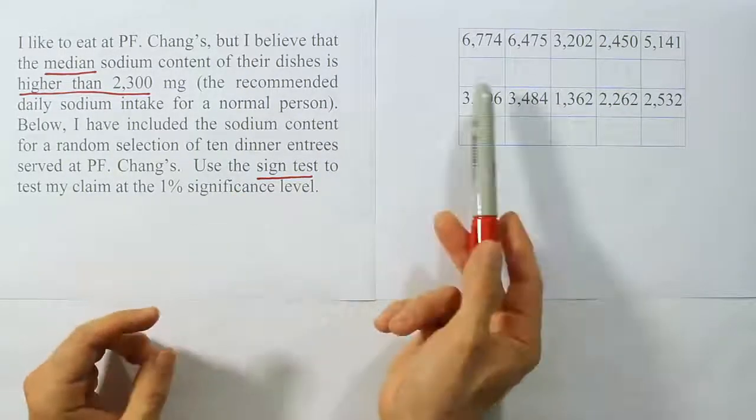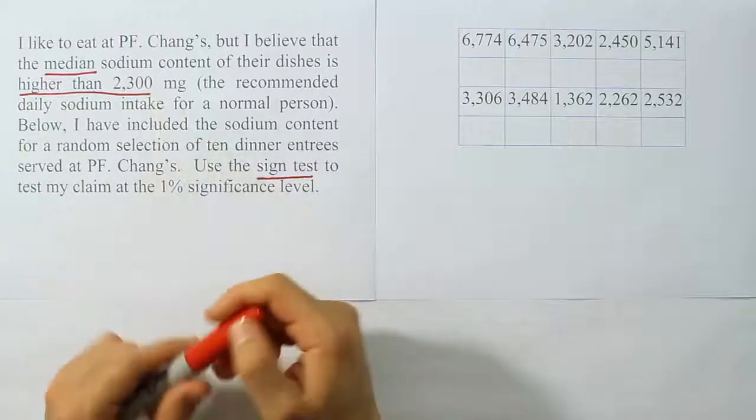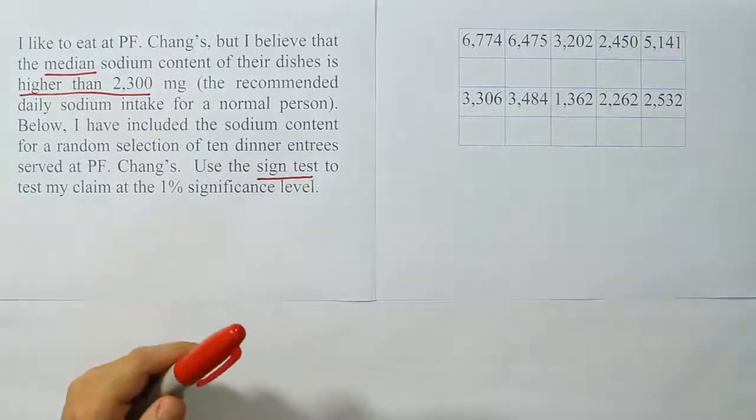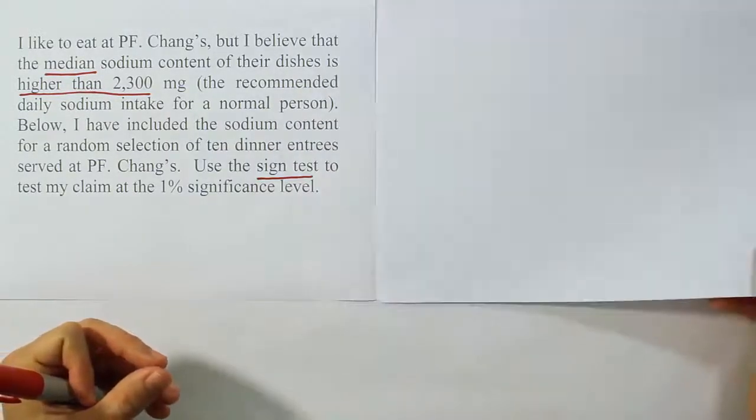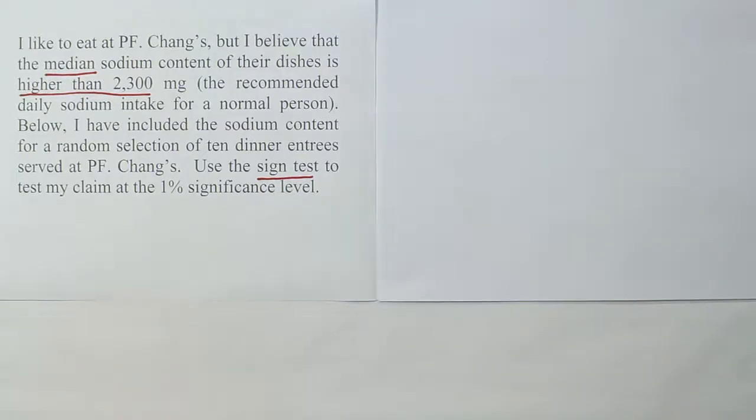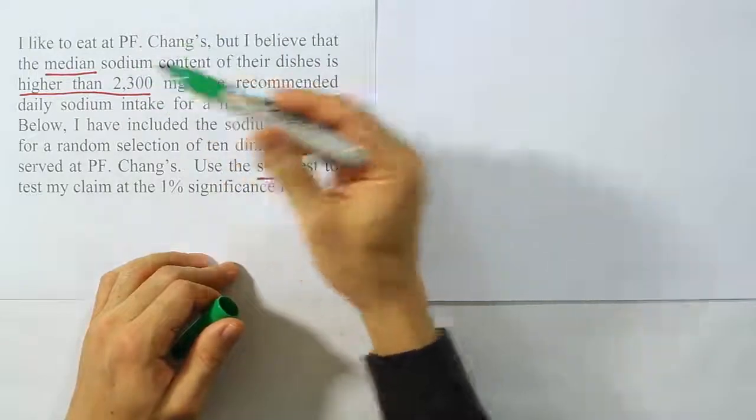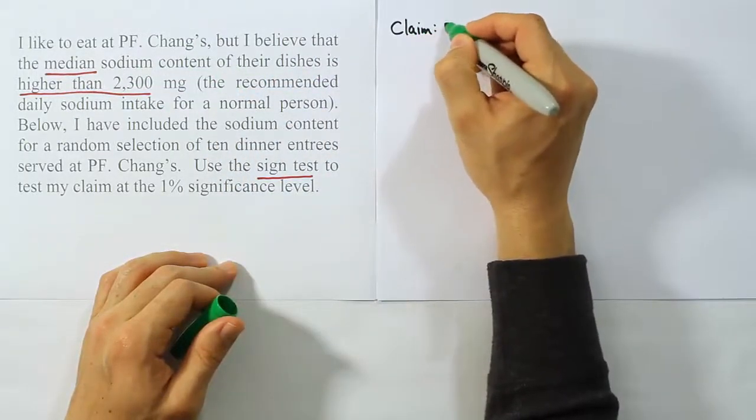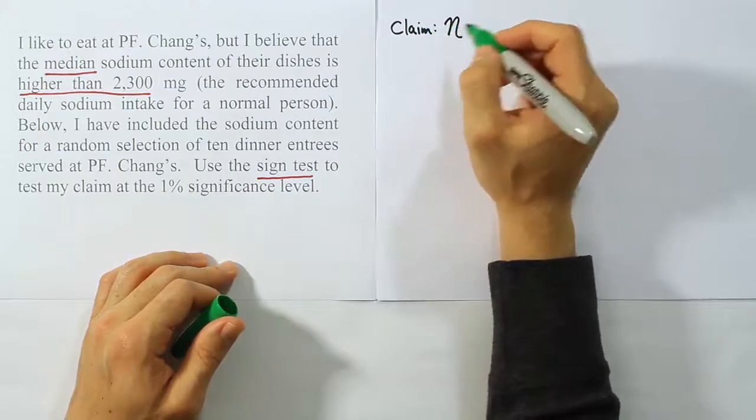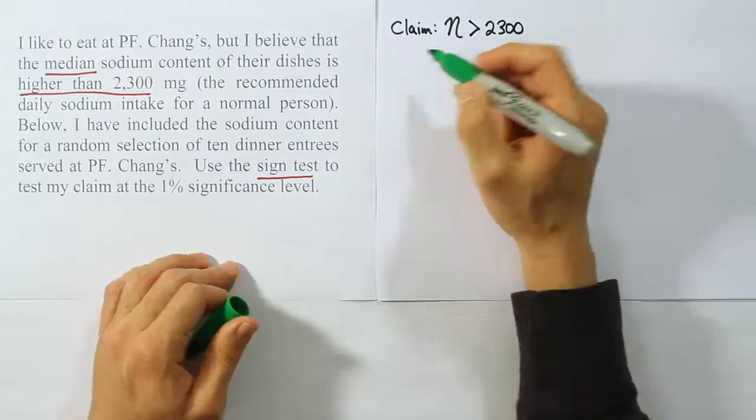I have some data, I have a 1% significance level, I have my claim. I think we're ready to start. So let's go ahead and write down the claim for the problem. Reading the information here, it says that I believe that the median sodium content, so my claim of course will be about η the median, it says it's higher than, that's greater than 2300. So that's my value.